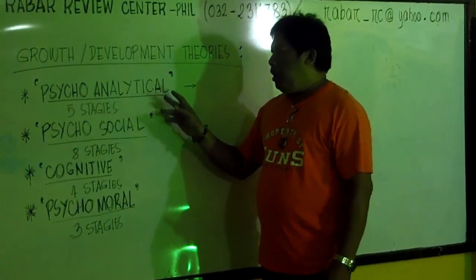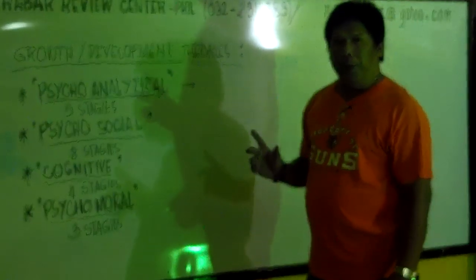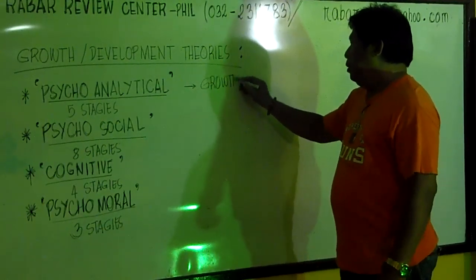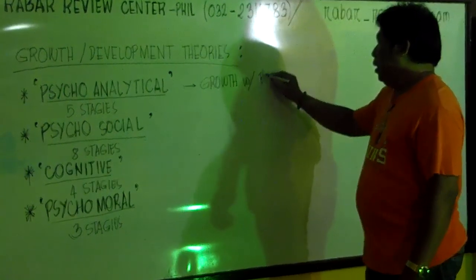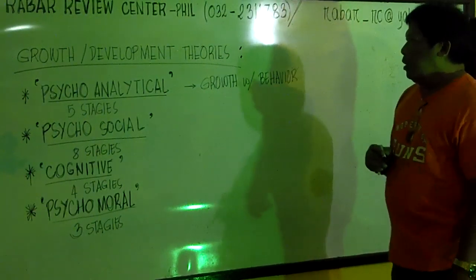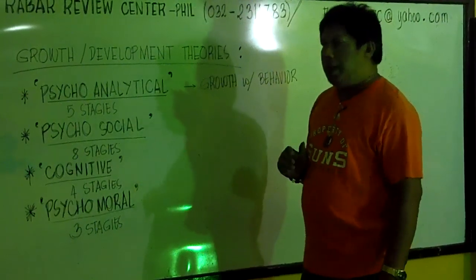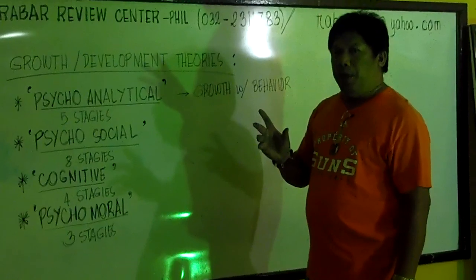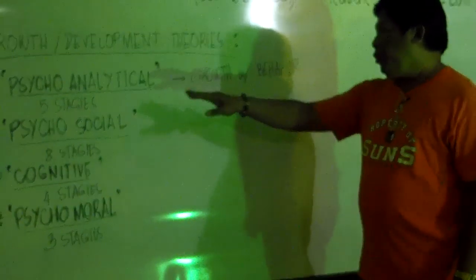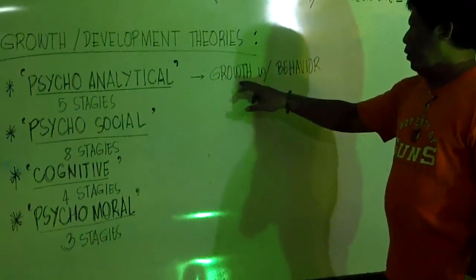For psychoanalytical, this is all about growth and development of a child based on his behavior. We have five stages for psychoanalytical, and each stage corresponds to the ages of a child as it grows. So this is stages where we can better understand a child through his behaviors — growth with behaviors.